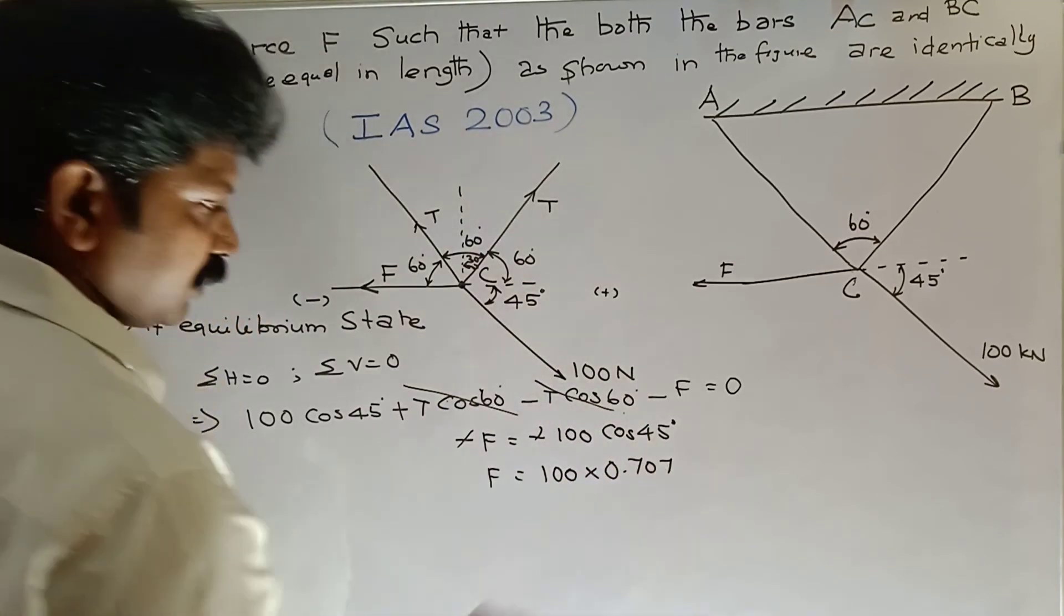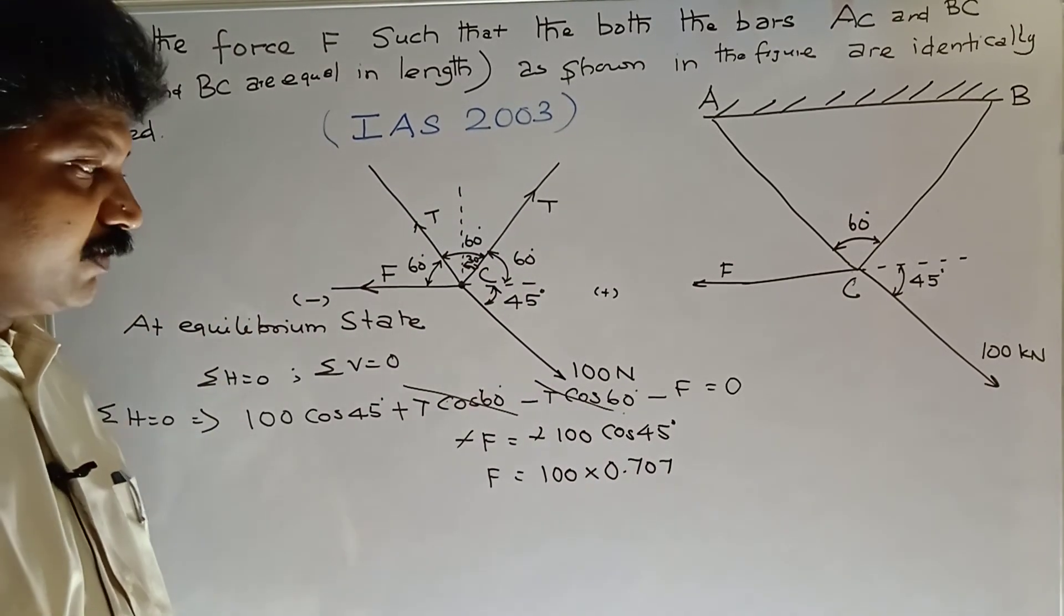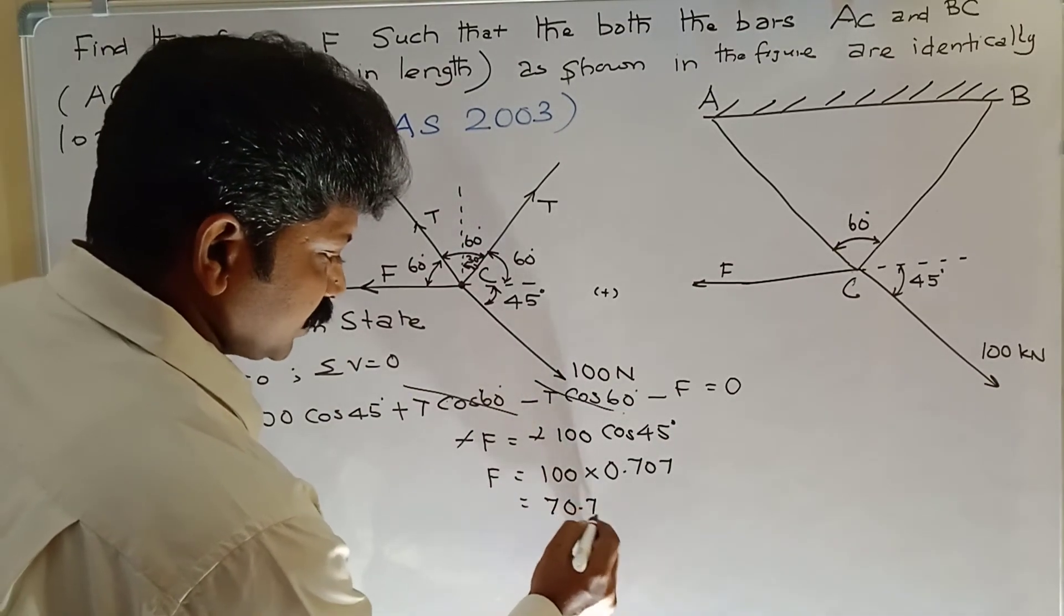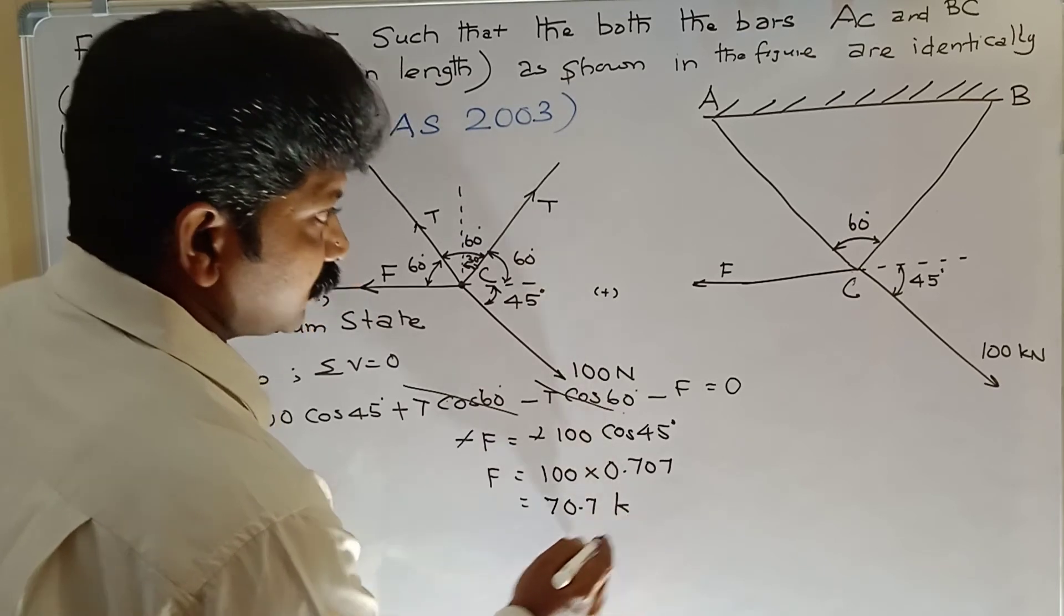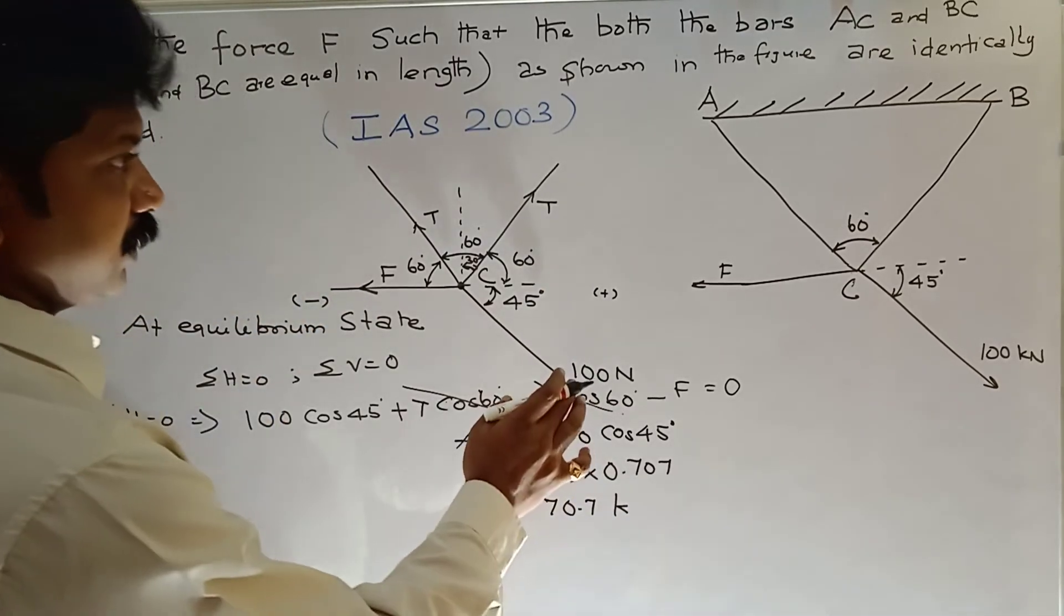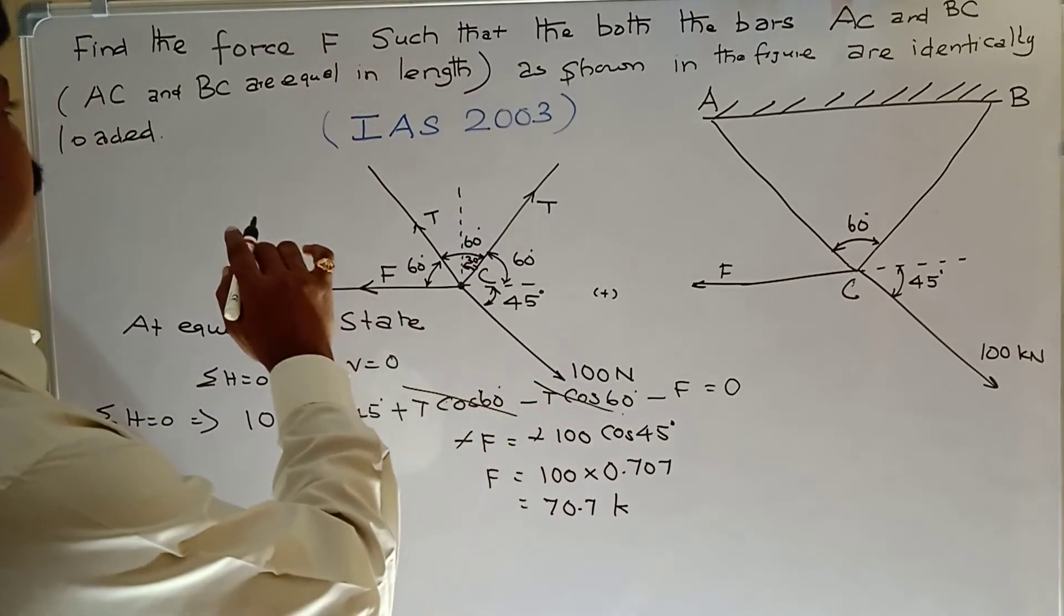Cos 45 equals 0.707. So the value, F equal to 70.7 kilonewtons.